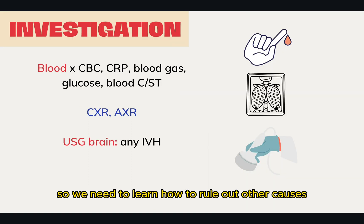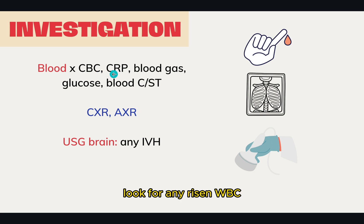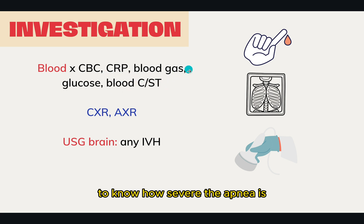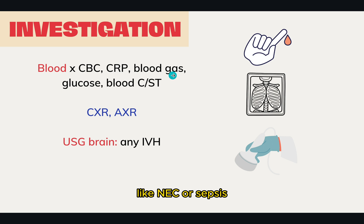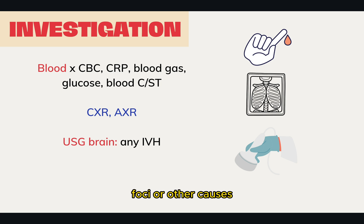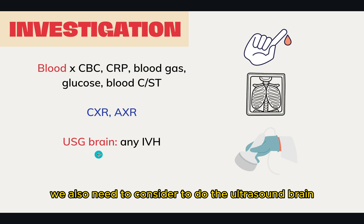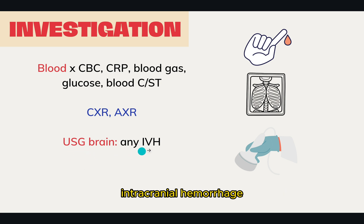For investigations, we need to rule out other causes. We need to take a complete blood count to look for anemia and any rise in white cell count. We need CRP and blood culture for anti-sepsis. We need blood gas to know how severe the apnea is — metabolic acidosis may signify NEC or sepsis. Check glucose to look for hypoglycemia, which can also lead to apnea. We need a chest X-ray and plus or minus abdominal X-ray: chest X-ray to look for infection foci or lung pathology leading to apnea; abdominal X-ray to look for features of NEC. We also need to consider a brain ultrasound to look for intraventricular hemorrhage or intracranial hemorrhage.